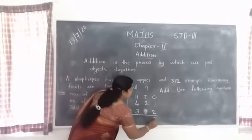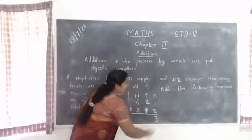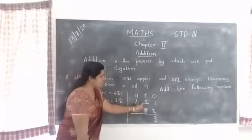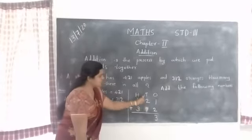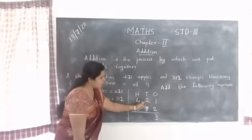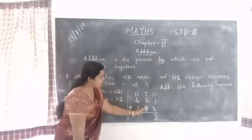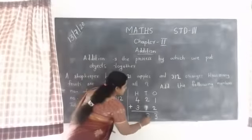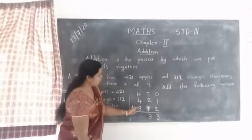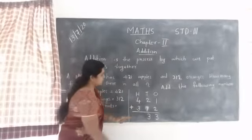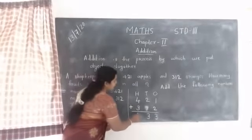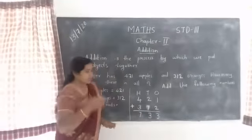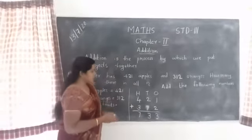Do you know the addition table? Then the tens column also: 2 plus 1 is equal to 3. Then the hundreds column: 4 plus 3 equals 7.